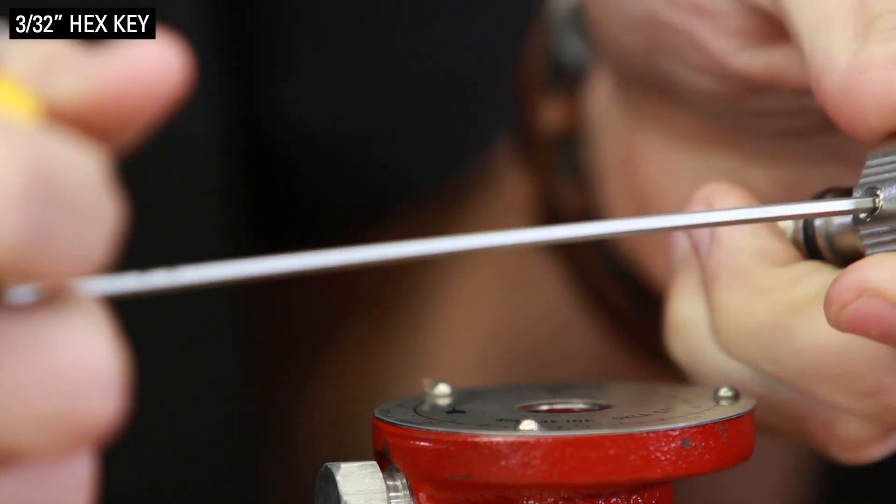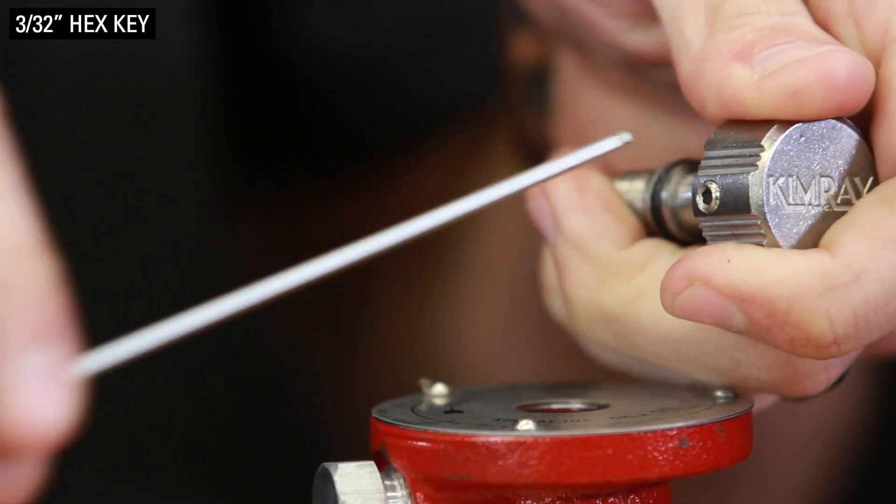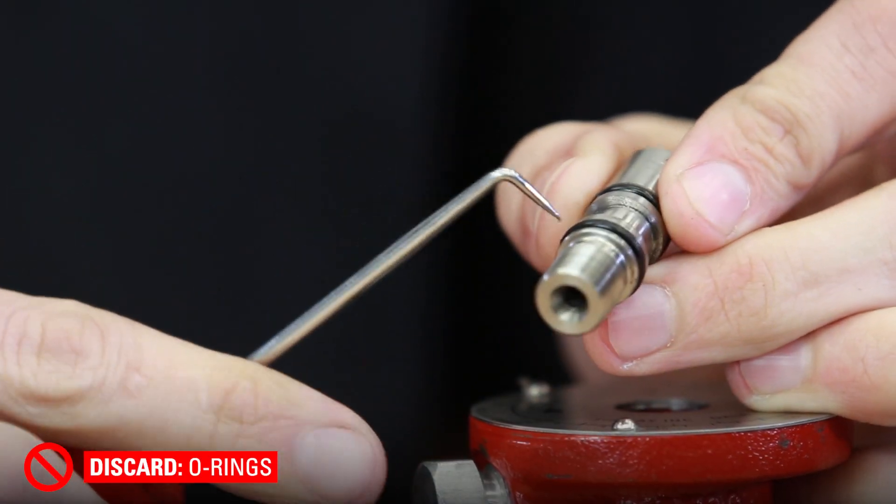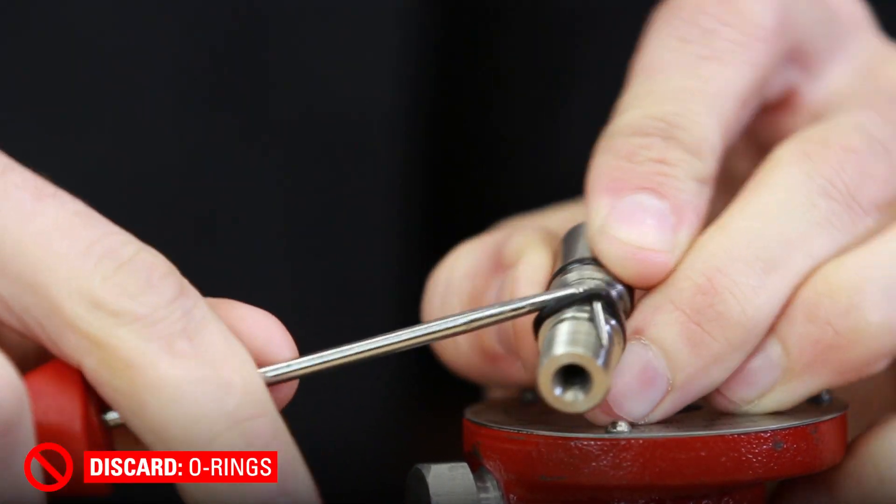Remove the set screw by using a 3/32nds hex key to remove the seat from the knob. Use a pick to remove and discard the O-rings from the seat.